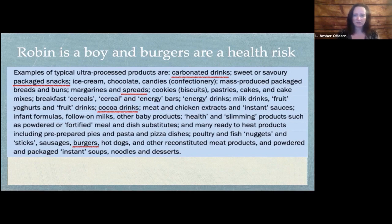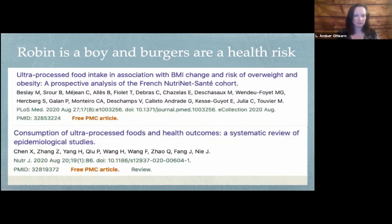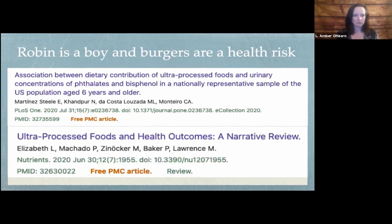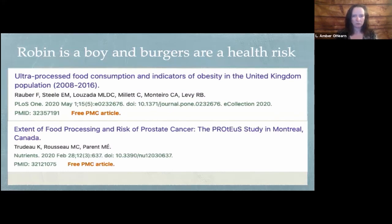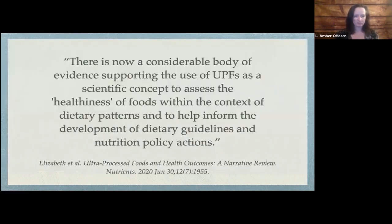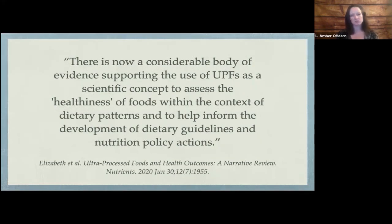Just in 2020, there are at least six studies using this categorization system and making conclusions that the categorization is correct. Here's an excerpt from one of them: 'There is now a considerable body of evidence supporting the use of ultra-processed foods as a scientific concept to assess the healthiness of foods within the context of dietary patterns and to help inform the development of dietary guidelines and nutrition policy actions.' As a data scientist, I call BS. They have not proven that any one of the foods within their categories is actually a culprit. And yet, I'm sure that in coming years people will point to these studies and say it's been proven — you might argue with it as a theory, but we have the proof. And I say that we don't.